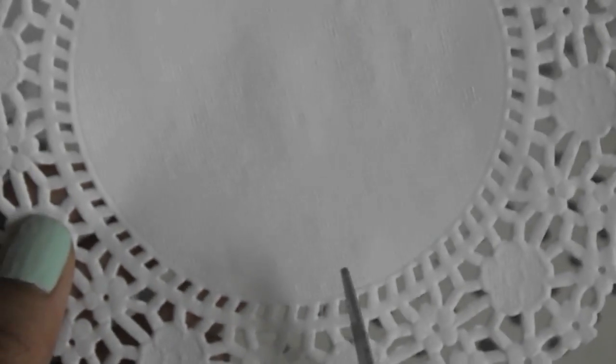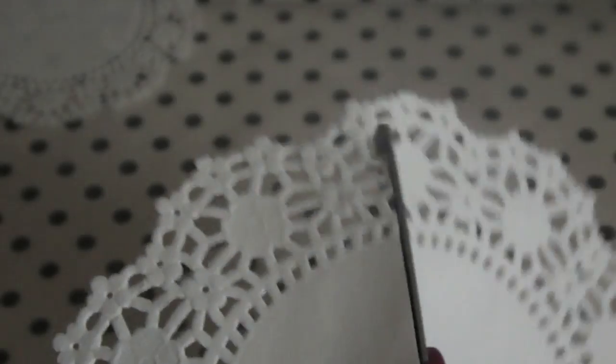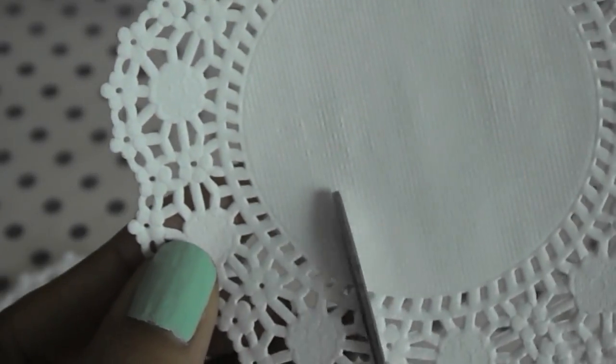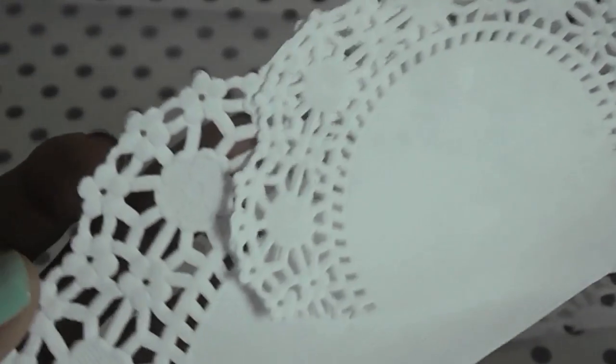And you're also going to need some Mod Podge glue. So you just want to take your larger one and cut it straight down the middle. And then cut about a fourth of your smaller one. Then you can just keep the extra pieces for other projects.